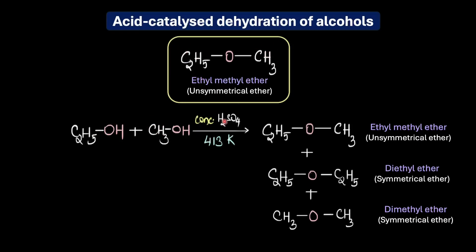And this would give us three possible ethers: ethyl methyl ether which is yes a desired unsymmetrical ether, but we also have other undesired side products forming like the symmetrical diethyl ether and dimethyl ether. So clearly you can see that this reaction is not selective because the alcohols can react in any combination via the SN2 mechanism to give us a mixture of products.